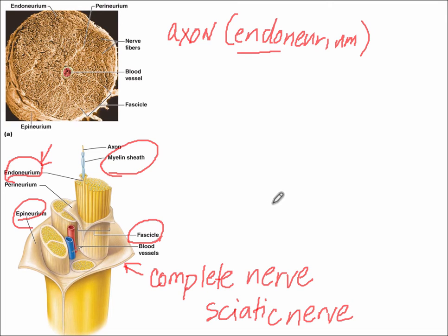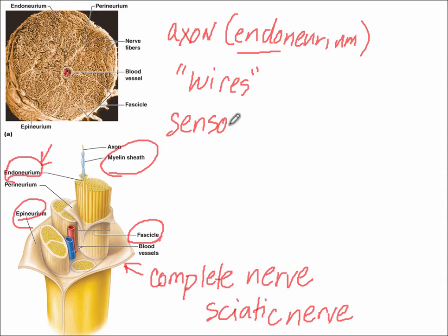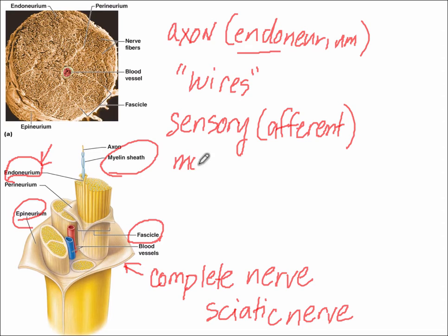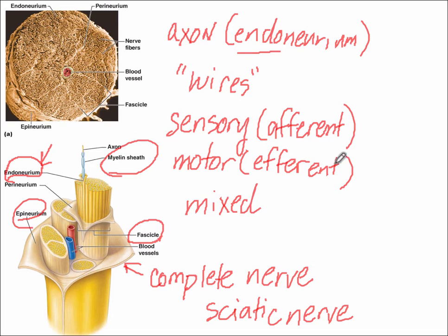These nerves are like wires that take information to the brain and away from the brain. When they take information to the brain, we use the term sensory, which also means afferent. When they take information away from the brain, the term for that is motor, which is also referred to as efferent. Most of the time, these nerves are going to be what we call mixed, meaning they have both afferent and efferent signals.